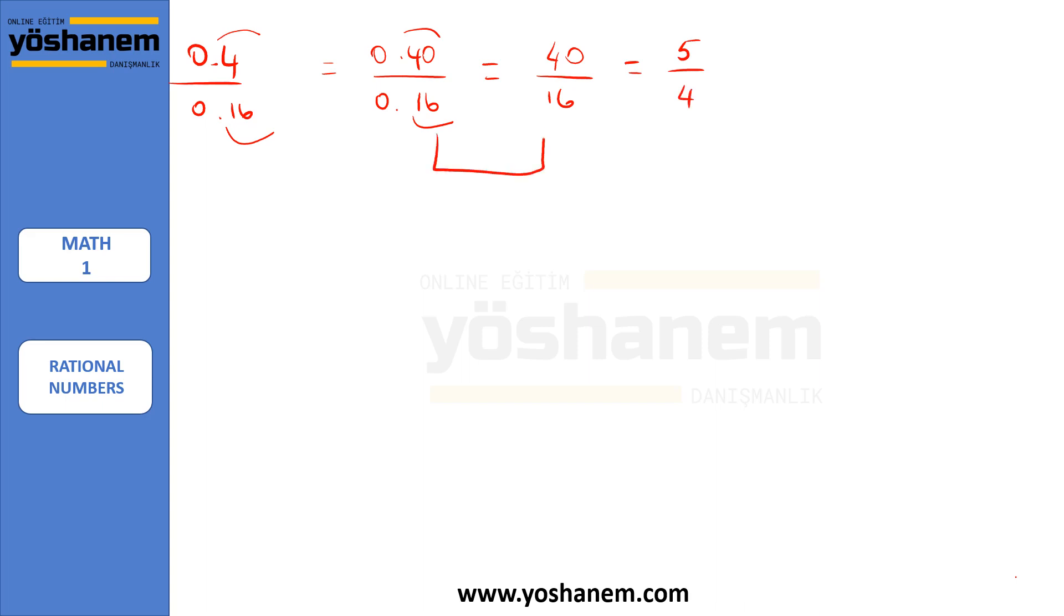Do you know how we did this? Let's explain it. 0.40 over 0.16. This one is 40 over 100, and this one is 16 over 100, right? 40 over 100 times 100 over 16, because this is a division, right? When we cancel hundreds, we'll have 40 over 16.